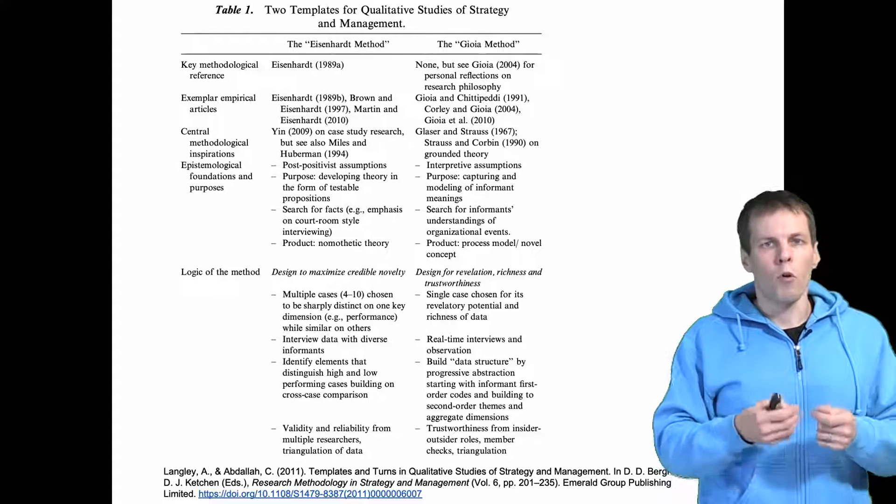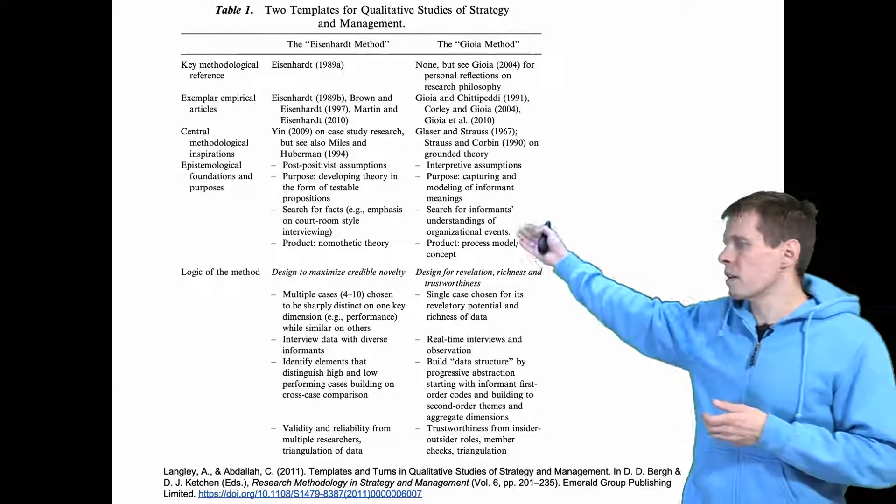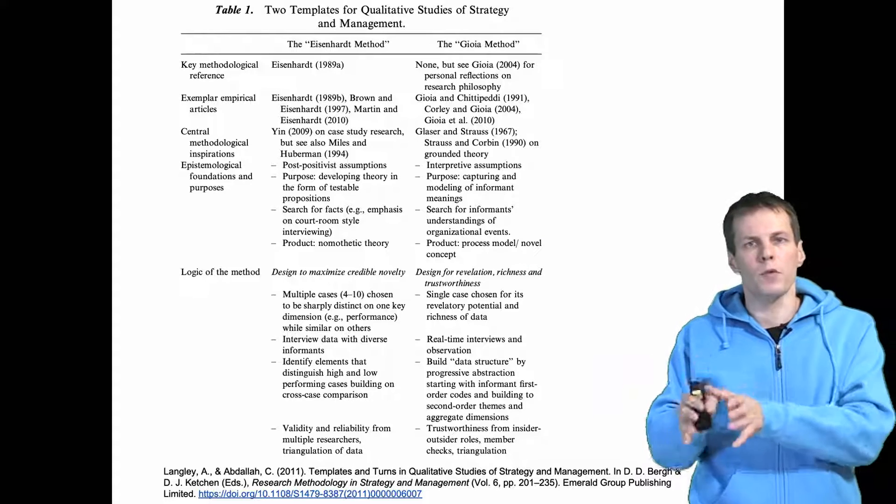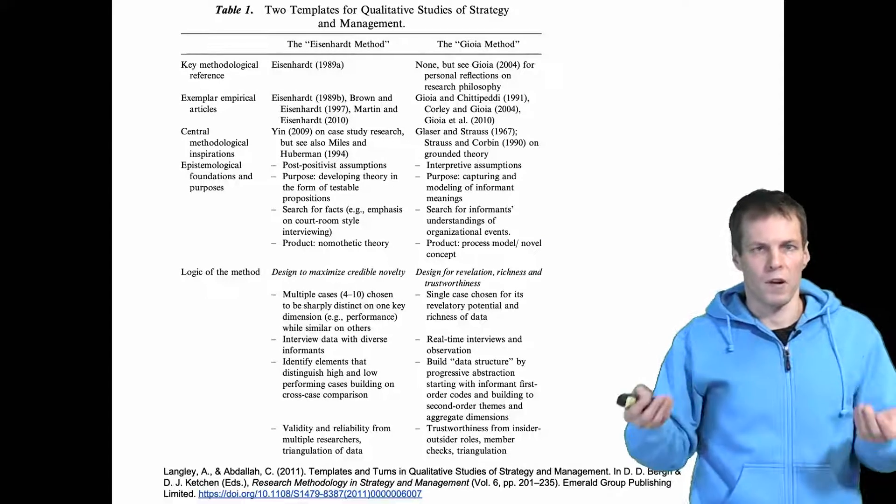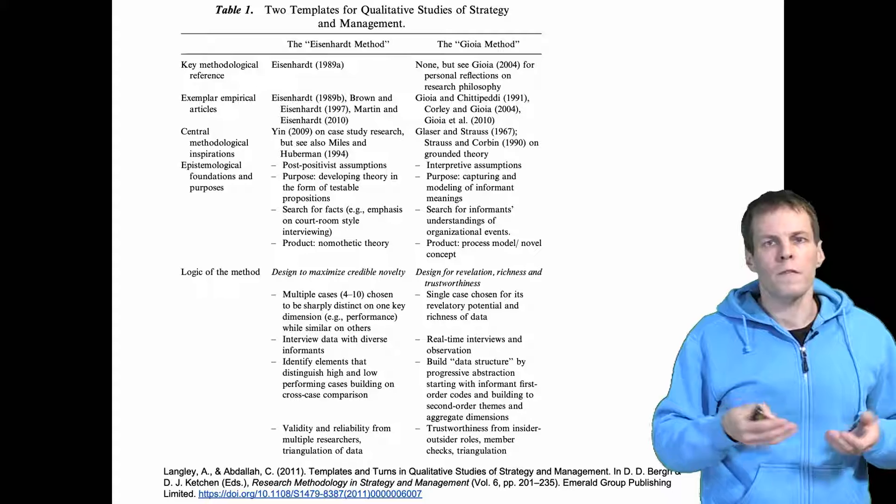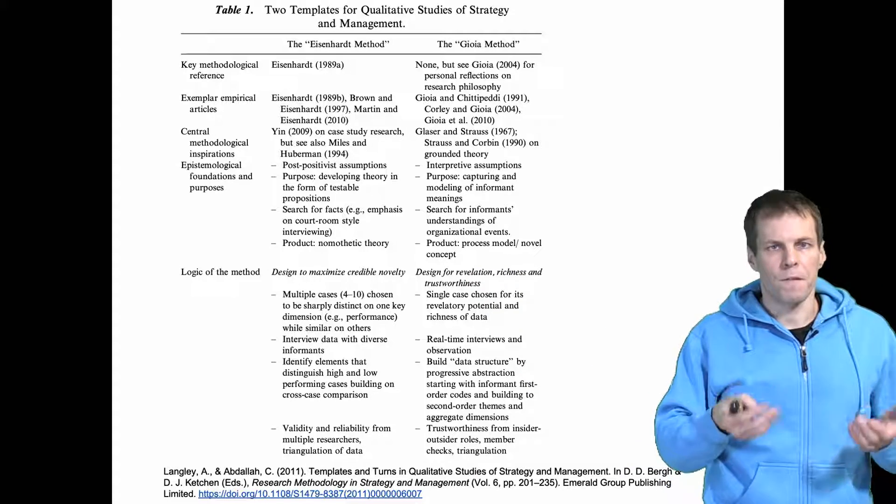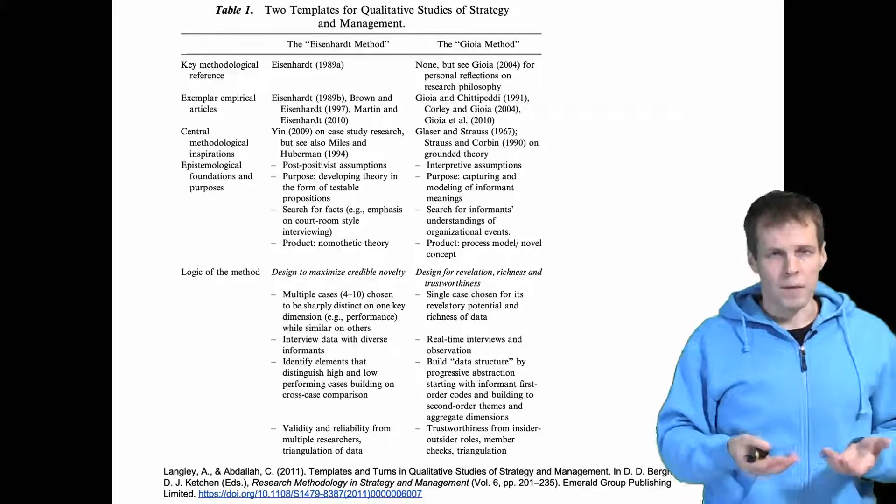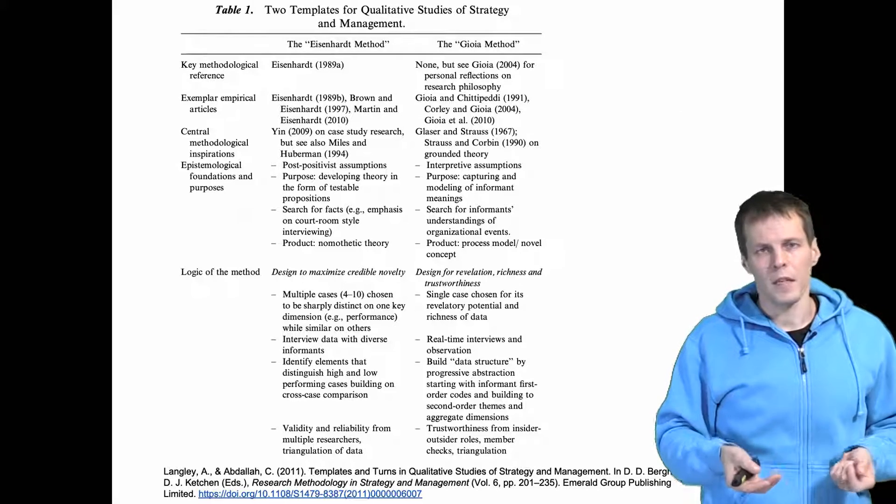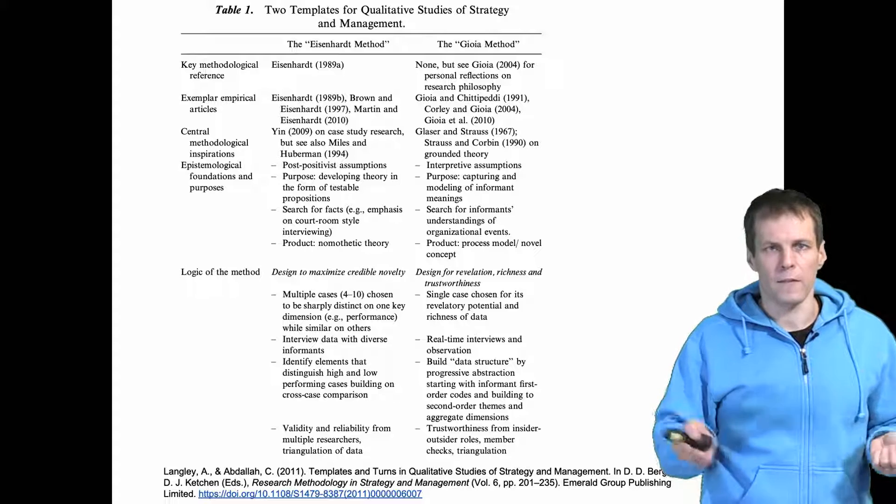So we try to be more objective, whereas in Gioia method we try to understand the people's subjective views on the events around them. There are also other differences. In Eisenhardt method the analysis proceeds a bit differently. The approach requires multiple cases, typically four to ten different cases.